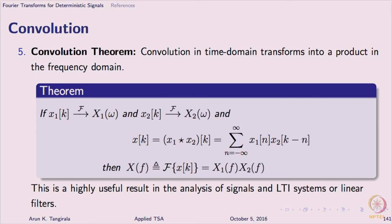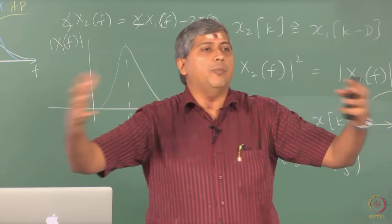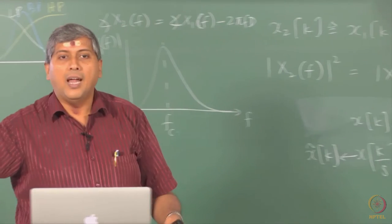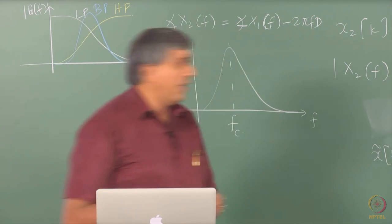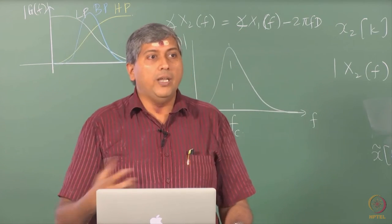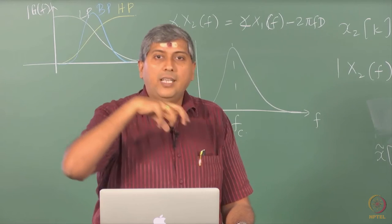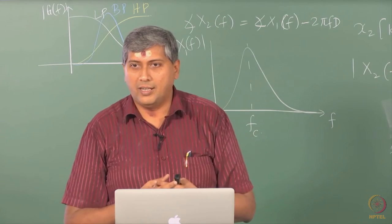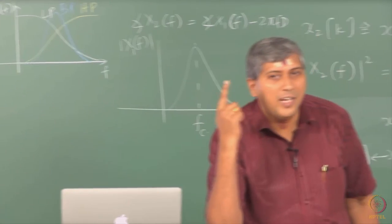Another thing you should understand is what Fourier transform is essentially doing for you: it is collecting all the information in the signal over the entire time from minus infinity to infinity and shrinking it to one point in frequency domain, which is at f. We had the expression earlier for DTFT — what is it doing? It is summing up the signal over the entire time. So Fourier transform is really collecting all the features of the signal over its entire existence and shrinking it to a single point in frequency domain.